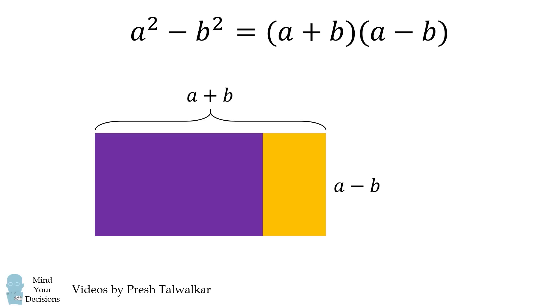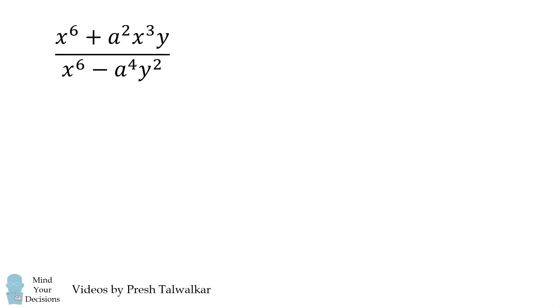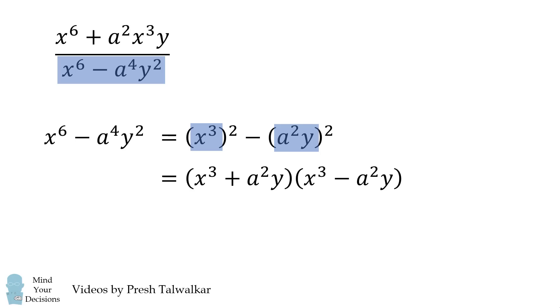So let's use it to solve this problem. Let's focus on the denominator. Notice it's actually a difference of squares. It's the difference of x cubed being squared and a squared y being squared. We then use the difference of squares formula on these terms to get the following.